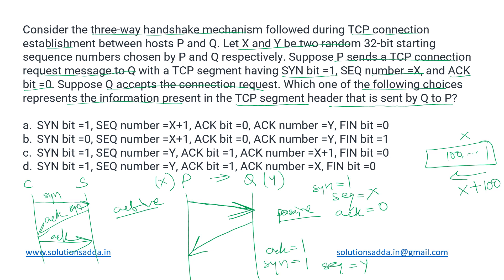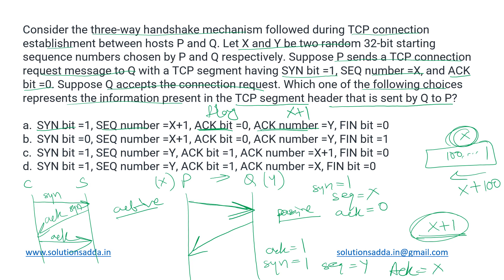Looking at the options, we have SYN bit, sequence number, ACK bit (a flag), and ACK number. The ACK number states what is the next expected byte from the other side. P sent a SYN packet, and a SYN packet consumes one sequence number. So sequence number X has been consumed, and the next byte from P will have sequence number X plus 1. Therefore, Q sets its ACK number to X plus 1, since that is what it expects next from P.